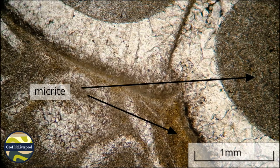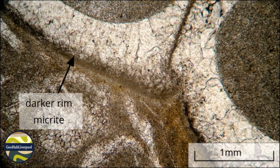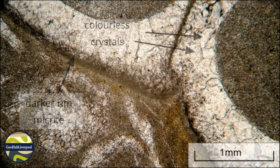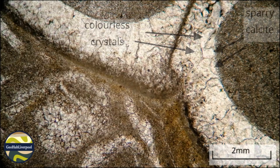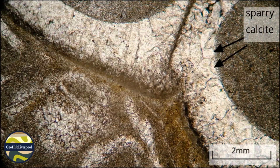Note that there are darker rims on the outer margins of the larger shell. These rims are also made of micrite. Many of the skeletal grains are unbroken. These bioclasts are composed of a colourless mineral which has moderately high relief. This mineral is calcite, and it is possible to see the outlines of the sparry calcite crystals even under plain polarised light.